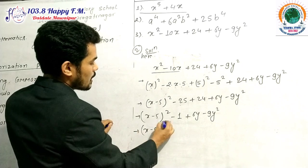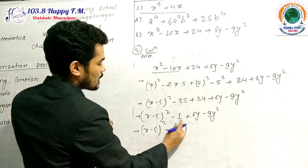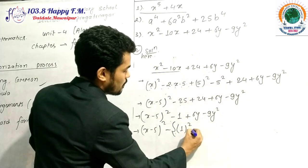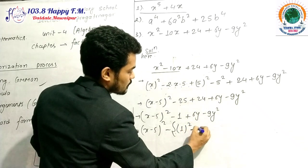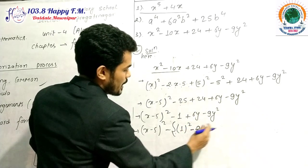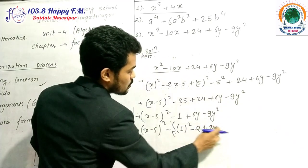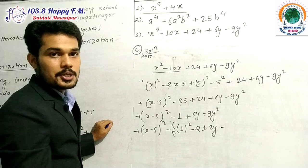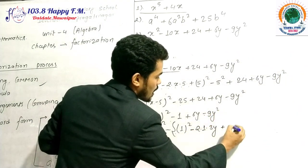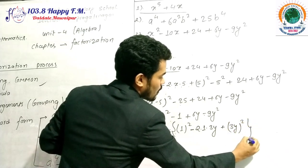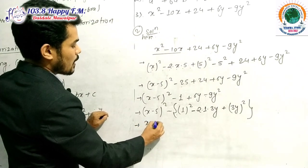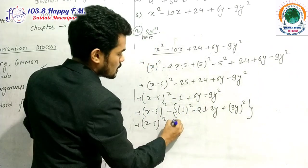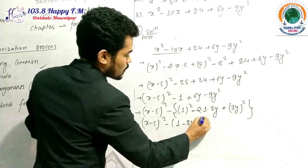So we have (x − 5)² − 25 + 24 + 6y − 9y². Combining the constants: −25 + 24 = −1, giving (x − 5)² − 1 + 6y − 9y². Taking −1 as a factor: (x − 5)² − (1 − 6y + 9y²). Now, 1 − 6y + 9y² = 1² − 2·1·3y + (3y)², which is (1 − 3y)². So we have (x − 5)² − (1 − 3y)², which is in the form A² − B².